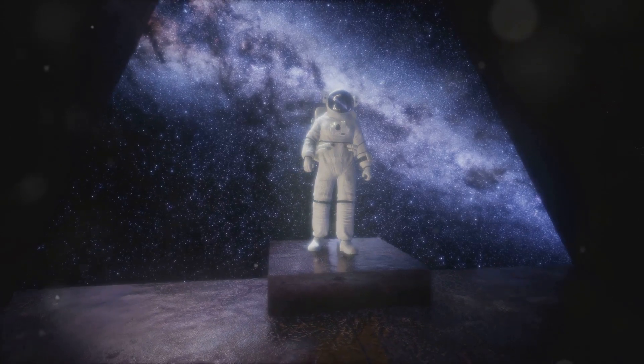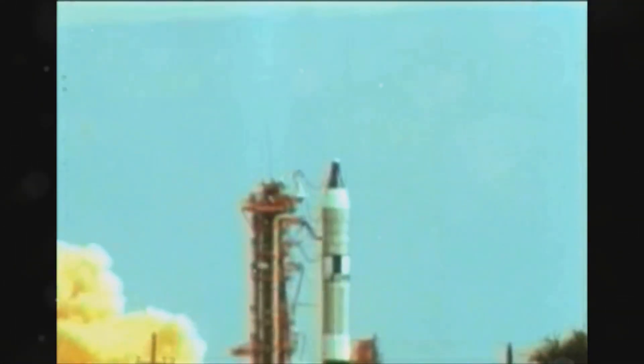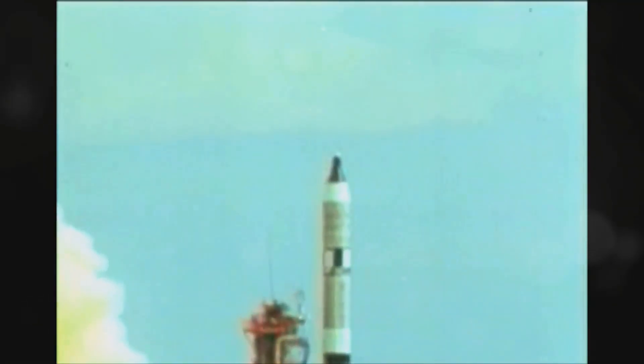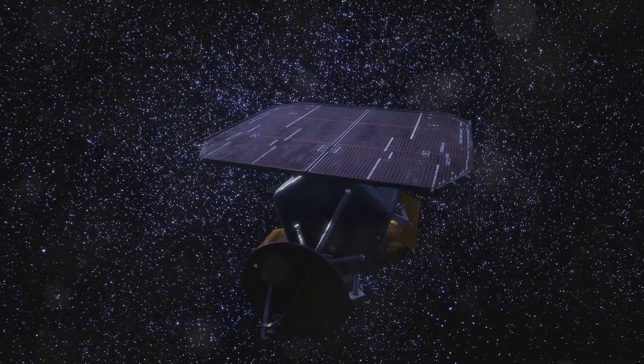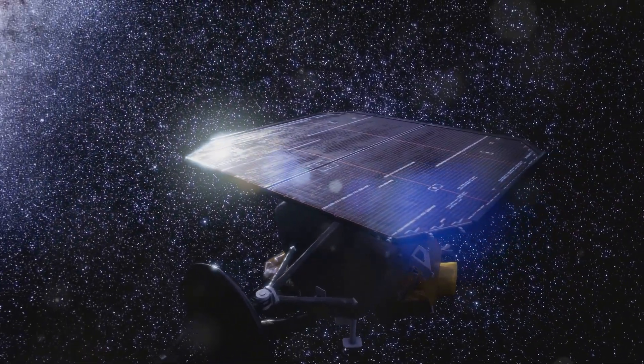Mystery 3, The Pioneer Anomaly. Launched in the 1970s, the Pioneer 10 and 11 spacecraft were the first to explore the outer planets and venture into interstellar space. But as they journeyed farther from the sun, something unexpected happened. They began to slow down.